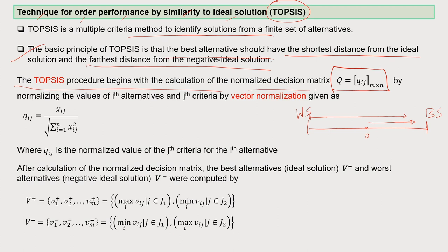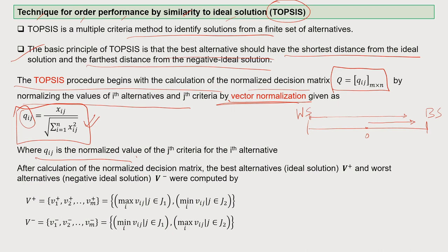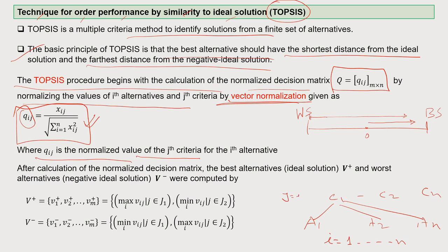The normalized decision matrix normalizes the values of the i-th alternative and j-th criteria by vector normalization. The formula is: q_ij equals x_ij divided by the summation of x_ij for i equals 1 to n. Here, q_ij is the normalized value of the j-th criteria for the i-th alternative, where i can range from 1 to n and j criteria also from 1 to n.